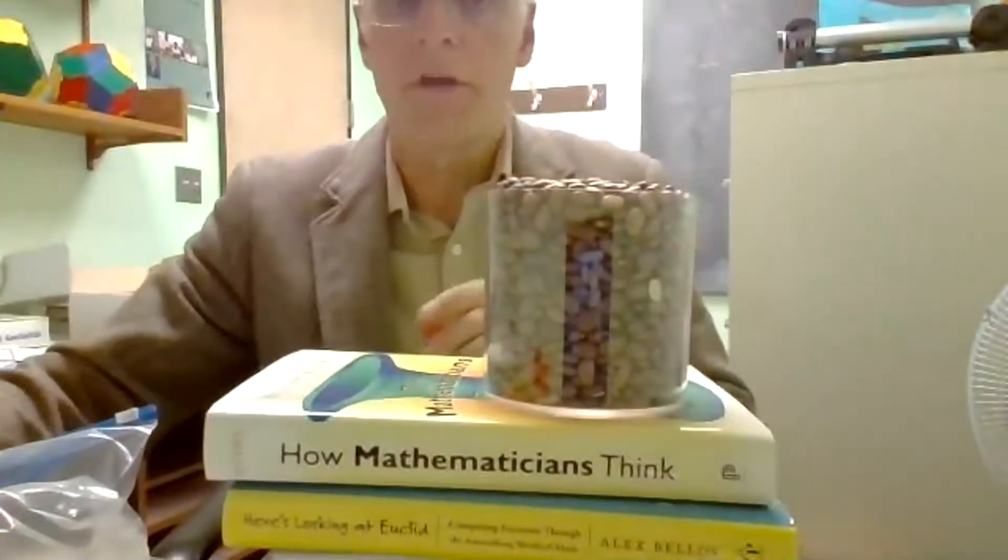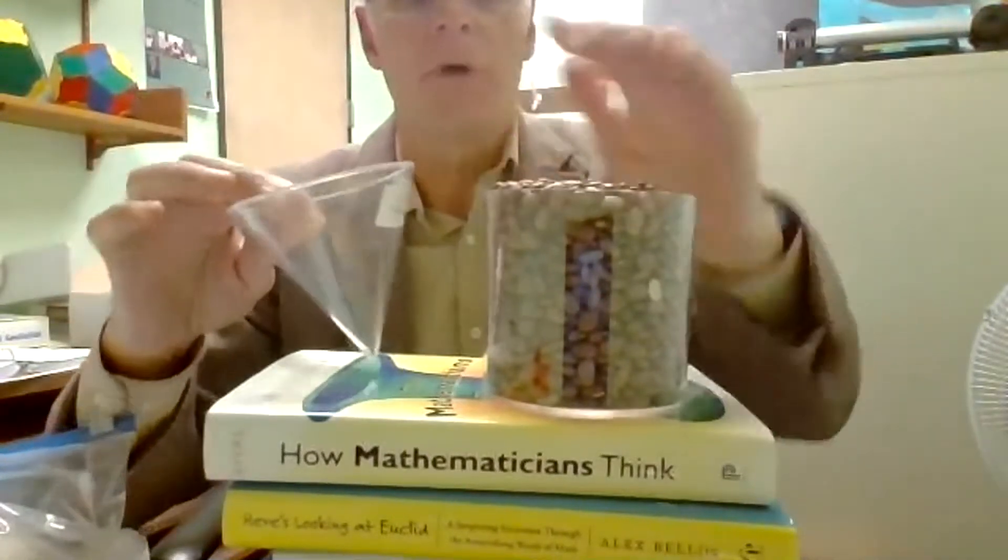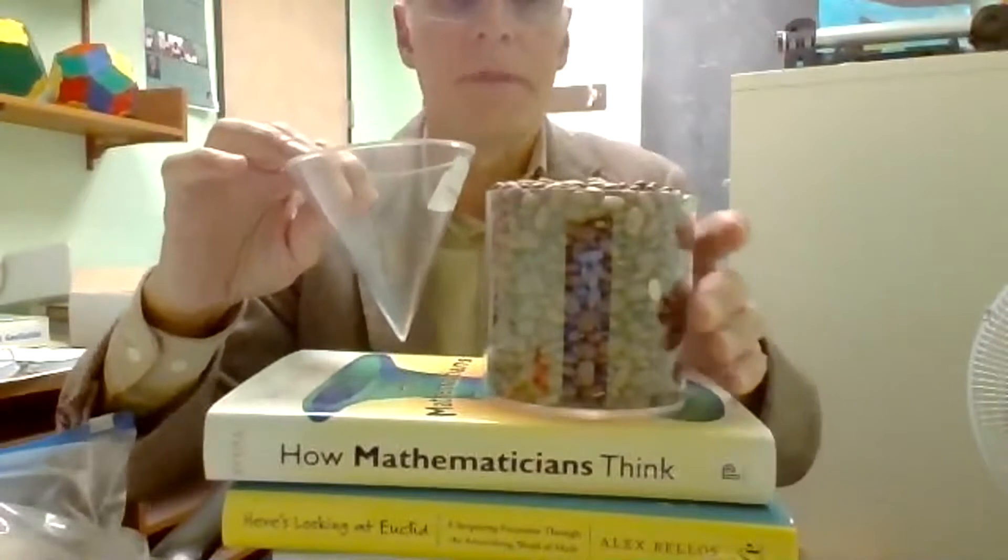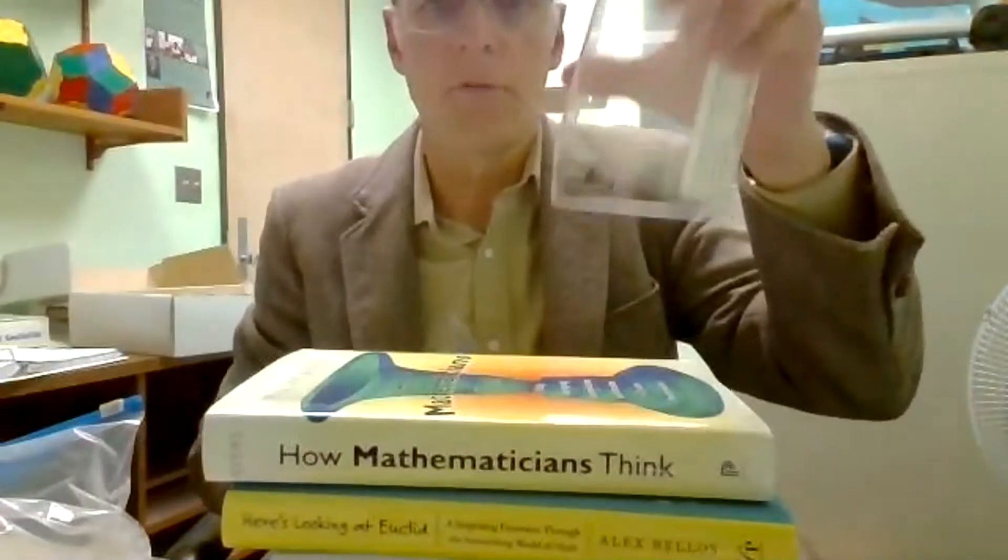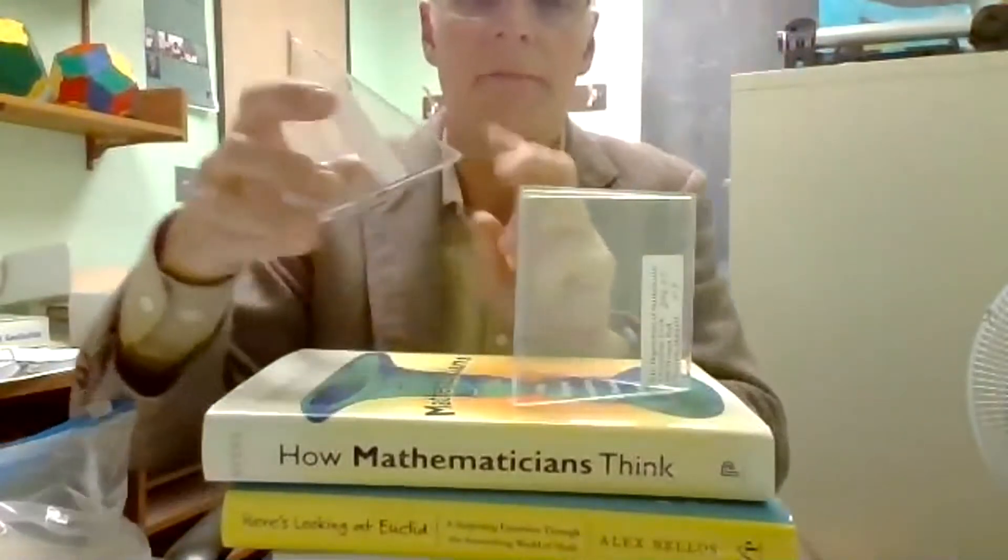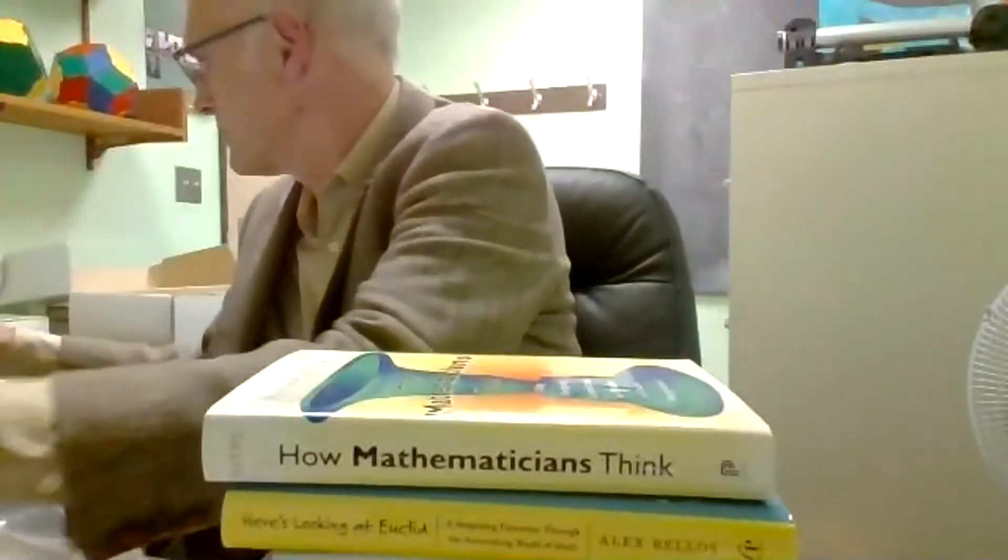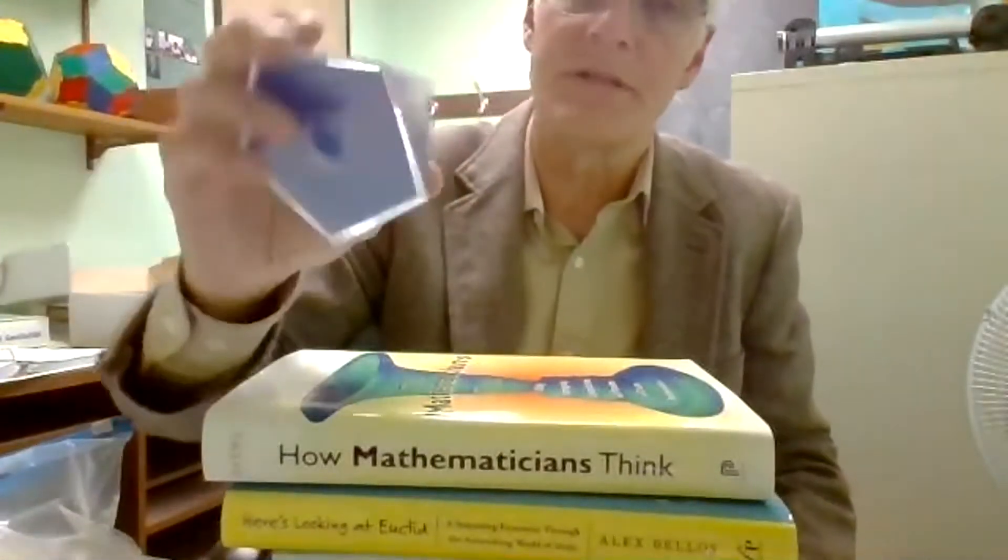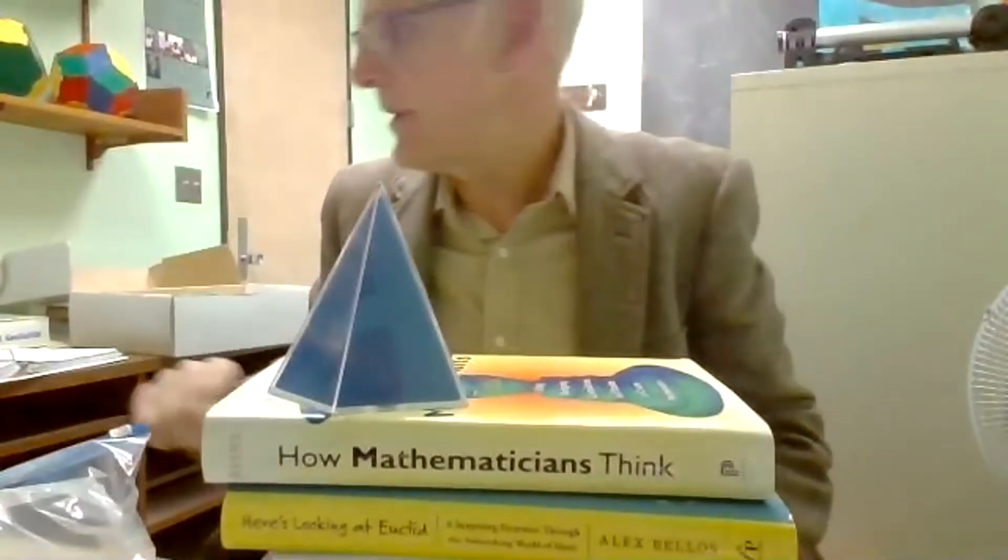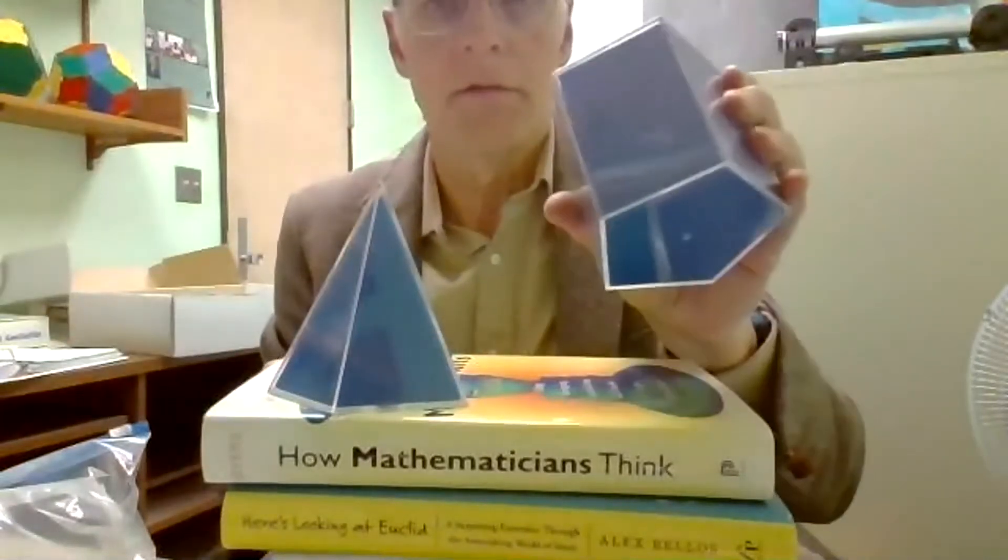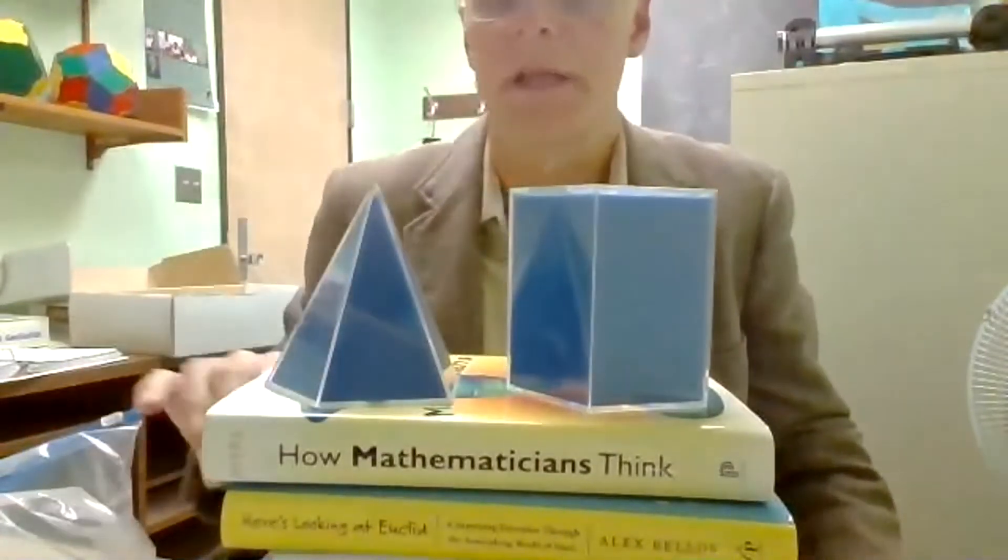The volume of the cone is one-third the volume of the corresponding cylinder. This can also be done with a triangular pyramid and a triangular prism or any other pyramid. This one happens to be a pentagonal pyramid and a pentagonal prism. Pour three of these into here, and it would fill it up.